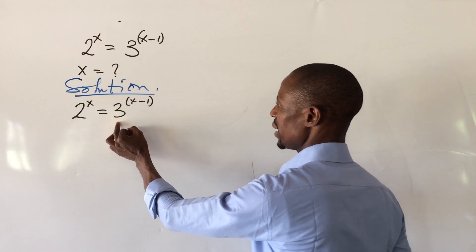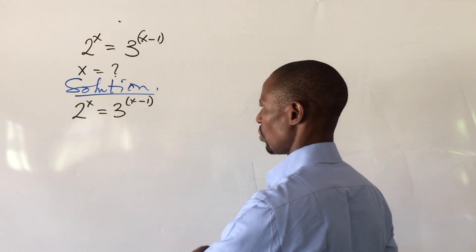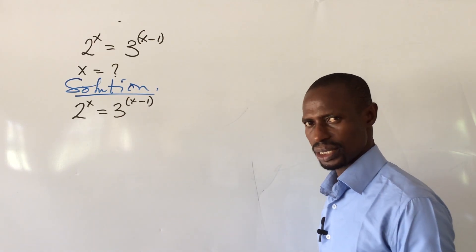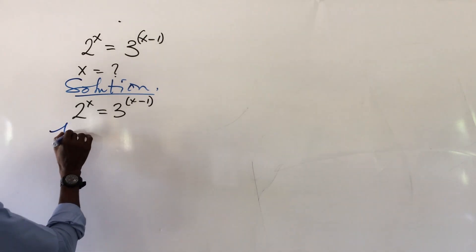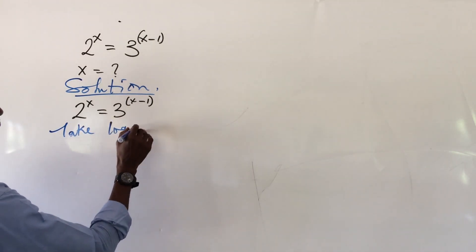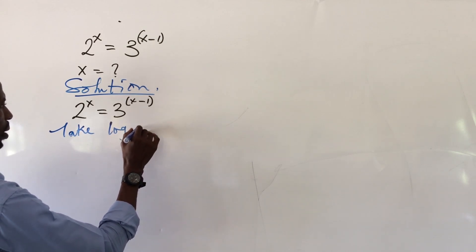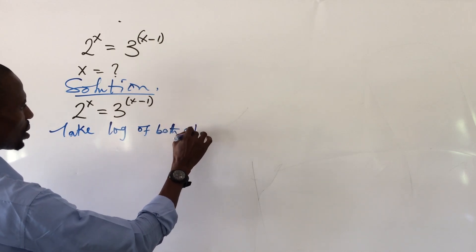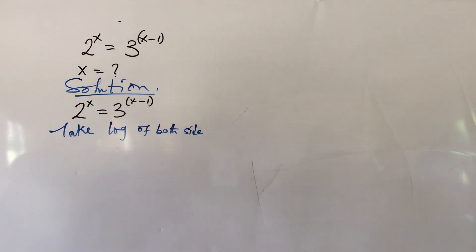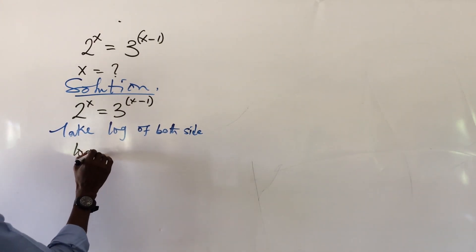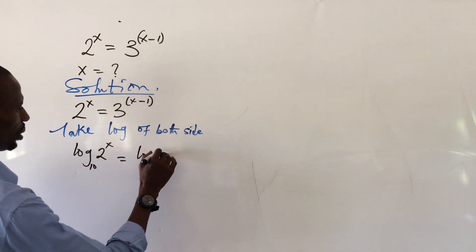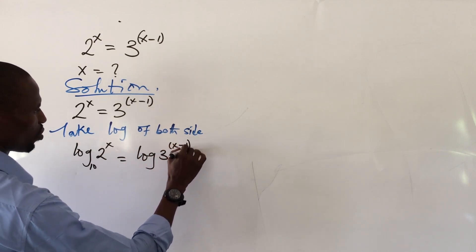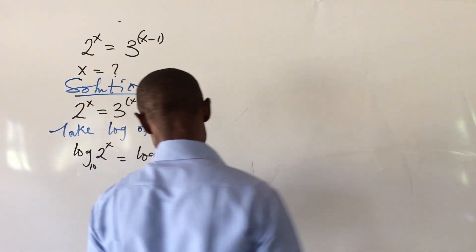We can solve this using two different methods — by opening the bracket, or first of all, I want to take the log of both sides. If we take the log to base 10 of both sides, this is going to give us: log of 2 to the power of x (base 10) equals log of 3 to the power of (x minus 1) (base 10).